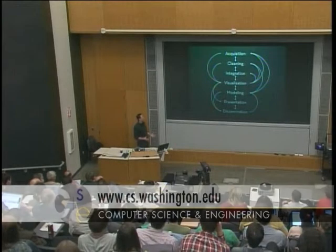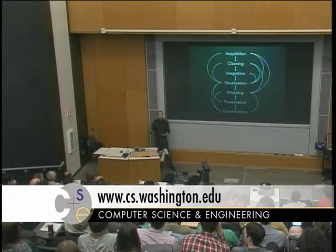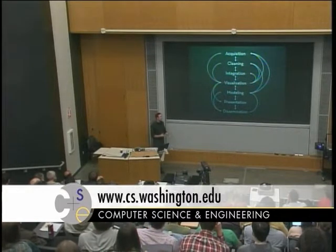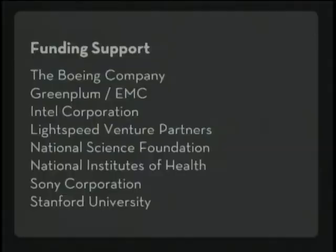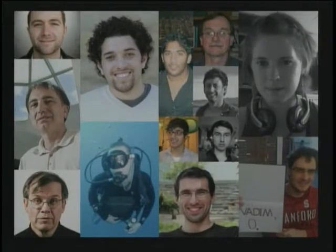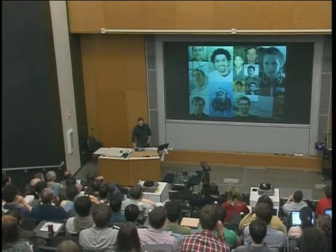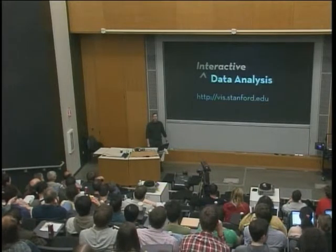In the course of this talk, I've given you a sense of interesting research problems at the intersection of databases, analysis algorithms, and visualization — helping make analysis more accessible to a broader audience while making experts more efficient. Throughout this pipeline we're identifying bottlenecks in the analysis process and developing new visualizations and interfaces to help analysts be more effective. Thanks to our various funders including Boeing, Greenplum, Intel, and various funding agencies, and to the many students and collaborators within the Stanford Visualization Group. You can find our papers and open-source software at viz.stanford.edu.